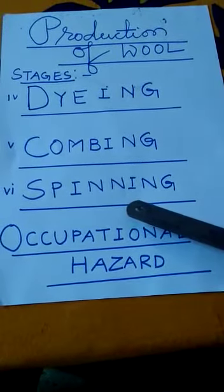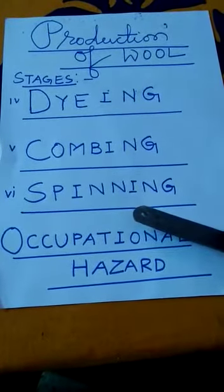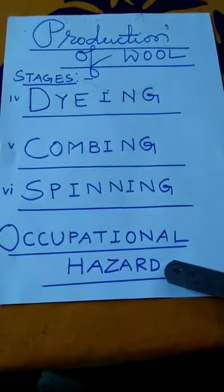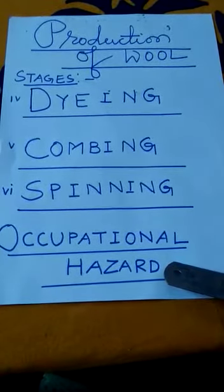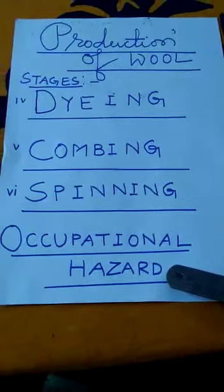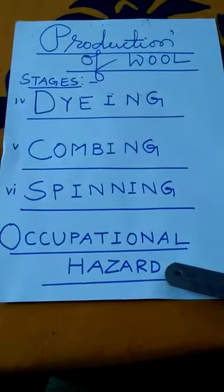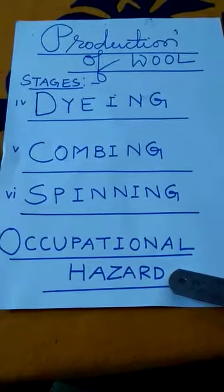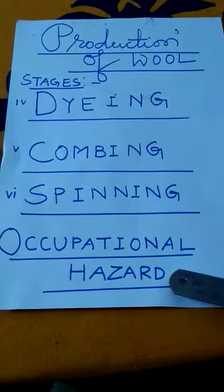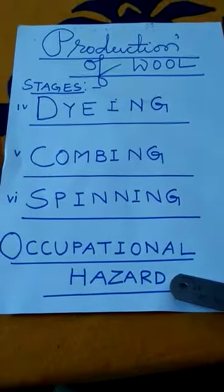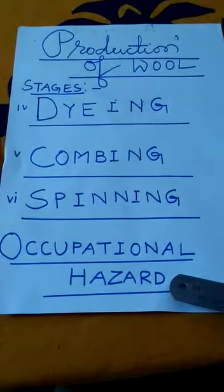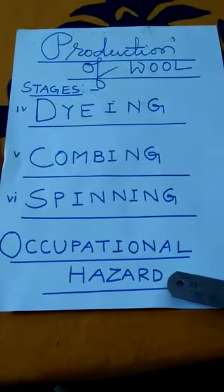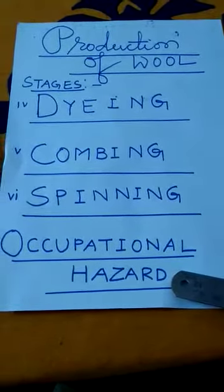Now I will tell you about the occupational hazards in the production of wool. Occupational hazards are the risks faced by the people who work in this industry. The wool industry is an important source of livelihood for many people in our country. The people who do the job of sorting — separating the fleece of sheep into fibers of different qualities — are called sorters. The sorters' job is very risky, because sometimes they get infected by the bacteria called anthrax, which causes a deadly blood disease called sorters' disease.